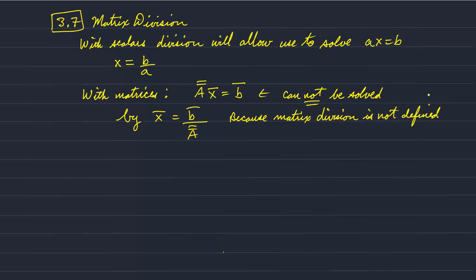But instead, we can multiply both sides of the equation by the inverse matrix. And the inverse matrix A is written as A raised to the minus 1 power.